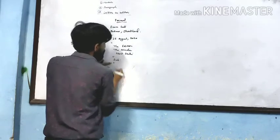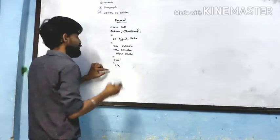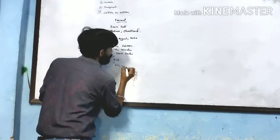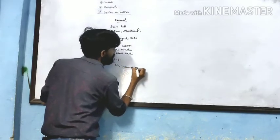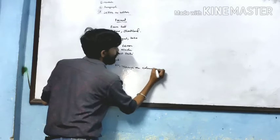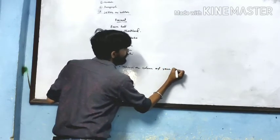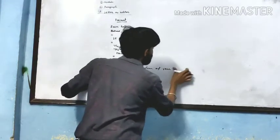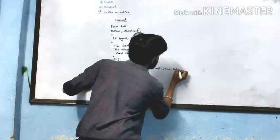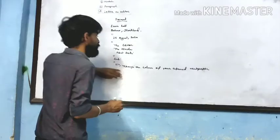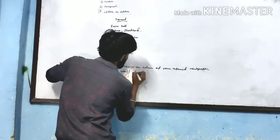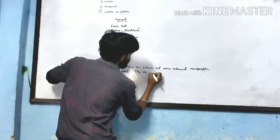After this, we will again leave one line and write 'Sir.' The first starting line for the letter is: 'Through the columns of your newspaper,' or 'Through the esteemed newspaper you can write.' Then the second line: 'Through the columns of your newspaper, I would like to draw the attention...'